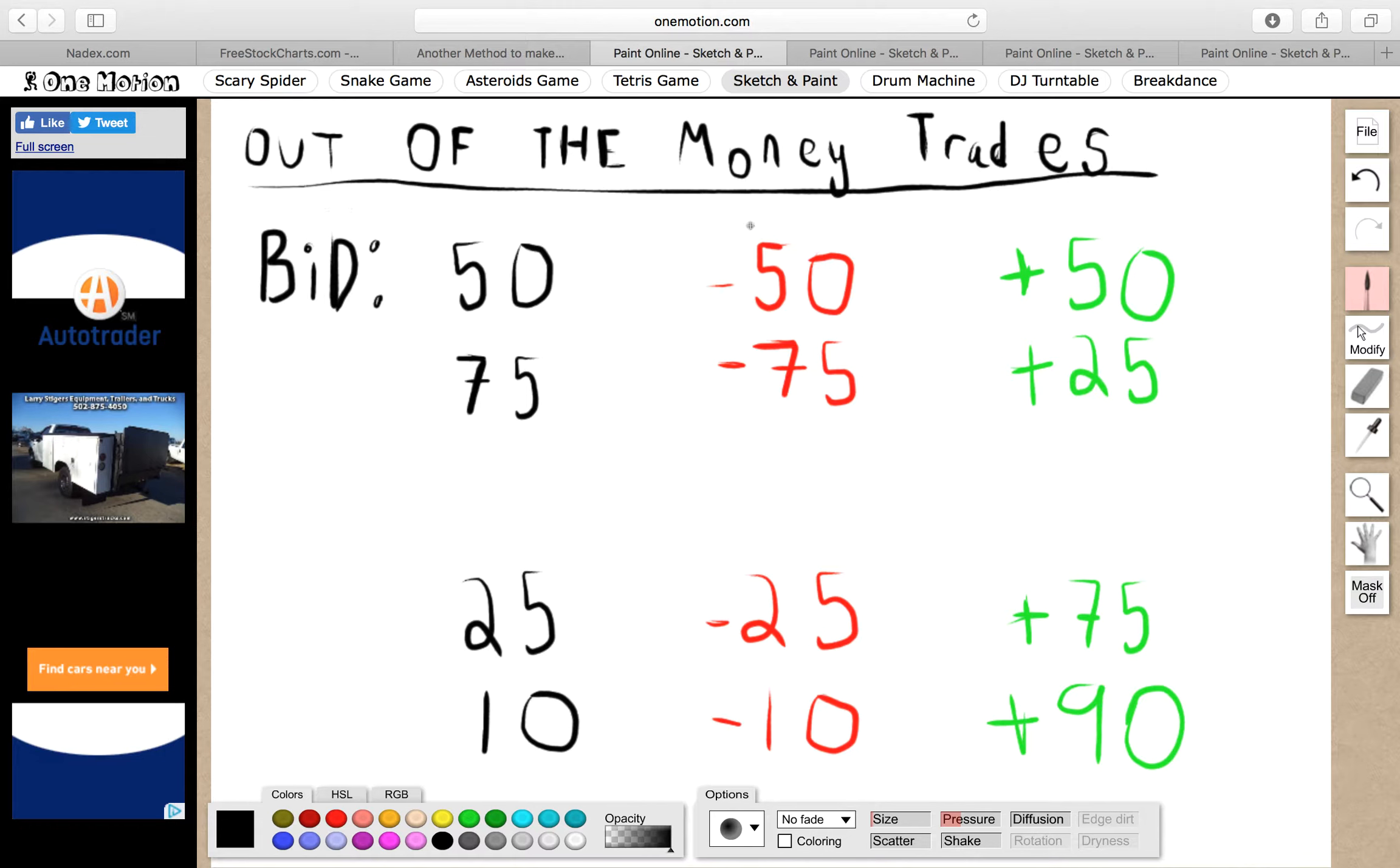So what are out of the money trades? In Nadex the way it works is out of the money trades are trades where basically you bet the opposite of what everybody else thinks. I've discussed this in another video briefly but I thought I'd devote a video to explain this to y'all.